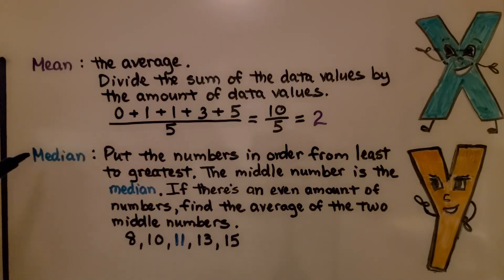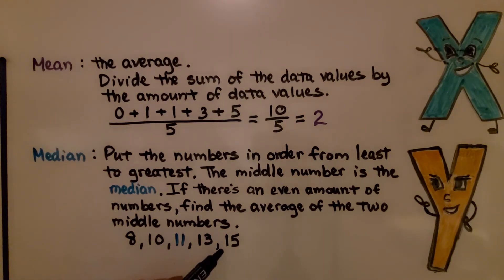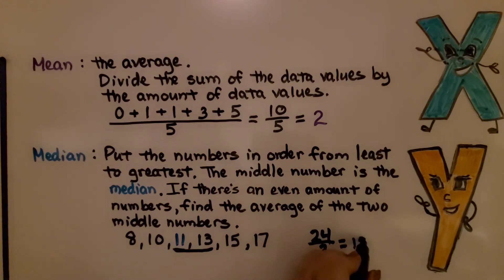The median, we put the numbers in order from least to greatest, and the middle number is the median. Now if there's an even amount of numbers, we find the average of the two middle numbers. We put them in order from least to greatest and the middle value is going to be the median. If there are an even number, let's say there's a 17 here, so that we have two middle values. We add them together. 11 plus 13 is 24.